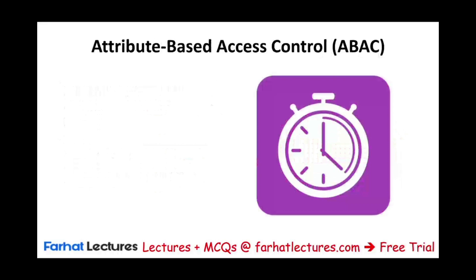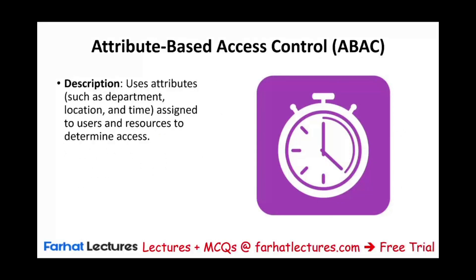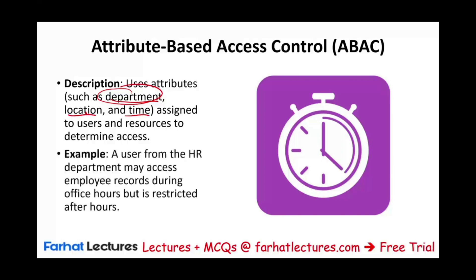You could also have attribute-based access control, or ABAC. Here you're using attributes such as department, location, or time assigned to users and resources to determine access. So if you work in a certain department, you have certain privileges and access. By time, for example, a user from the HR department may only access employee records during office hours, but it's restricted after office hours — we don't want you accessing this information when you're not supposed to.